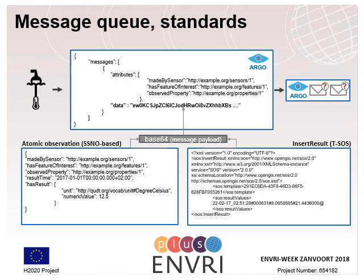To use the service, the sensor has to send the standardized data within a JSON envelope required by the Argo messaging service. In this envelope, the data has to be base64 encoded. We use the envelope also to provide some basic metadata about the sent data as convenience. Currently the service understands two formats: data series encoded as transactional SOS insert result XML, and atomic observations encoded as Semantic Sensor Network ontology-based JSON.